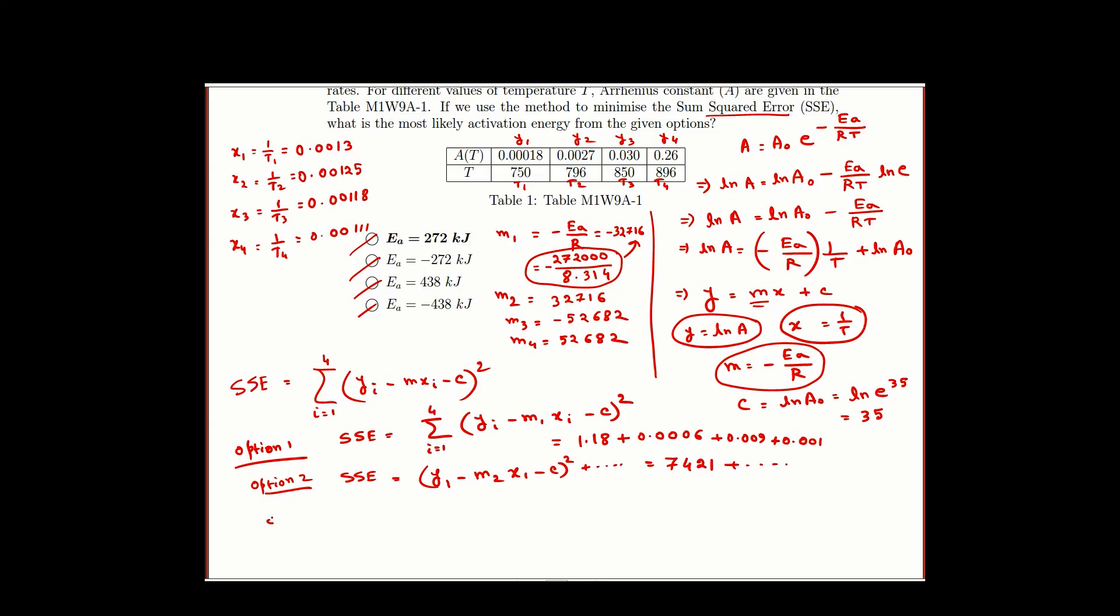If we calculate for option 3 again you will see the first term will be 618 and there are some 3 more terms.